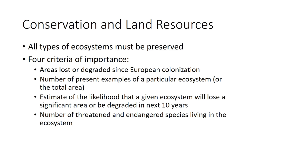In closing this chapter, we have four criteria for conservation of land resources. First, we want all types of land to have some sort of conservation area, representing every major ecosystem. We prioritize based on how much has been lost or degraded since colonization, the number of present examples of particular ecosystems — so a small localized ecosystem gets higher priority than coniferous forest, which we have in many places. We also consider the estimated likelihood that the ecosystem will lose area in the next ten years.